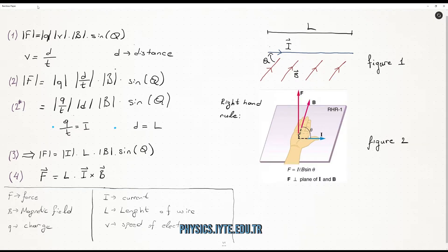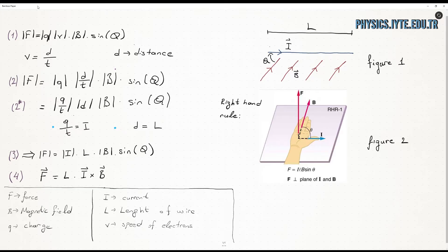At figure 1, you can see a representation of the system. The magnitude of force is equal to the product of the magnitudes of Q, V, B, and the sine of the angle between the magnetic field and current. Since we are using sine, the magnitude of force will be maximum when they are perpendicular to each other, and force will be zero when they are parallel.